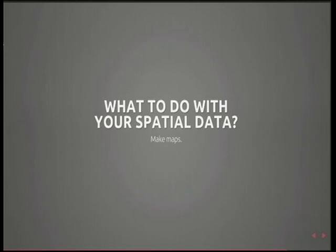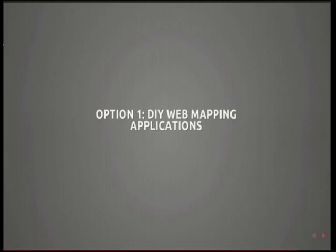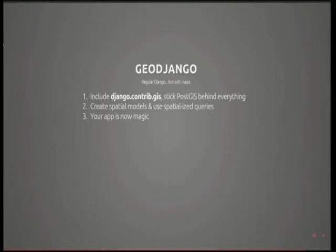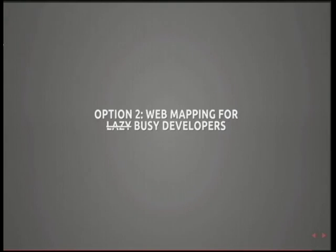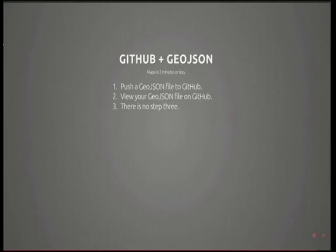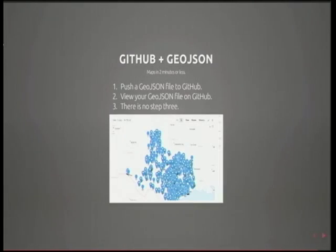What do you do with your spatial data? You make maps for fun and profit, usually on the web. Option one if you want to do it all yourself: use GeoDjango. You already know how to make a Django app — add one line in your includes, use a spatial database instead of a regular database, and your app is magic with maps in your GeoDjango admin. Option two for lazy or busy web developers: make a GeoJSON file, push it to GitHub. That's it — GitHub will render your GeoJSON file onto a map for you, you can embed it into other things, and they host it for you.